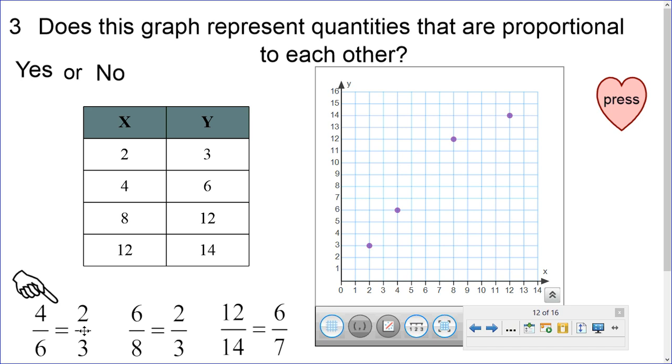So, first one is two thirds. Four, six simplifies to two thirds. Eight, twelve simplifies to two thirds. But, twelve, fourteen simplifies to six, sevenths. So, that's definitely not proportional because of the twelve, fourteen. So, if we draw a line, notice it doesn't go through origin. It's a little crooked, a little off. So, this is not good. So, definitely, it is not a proportional relationship.